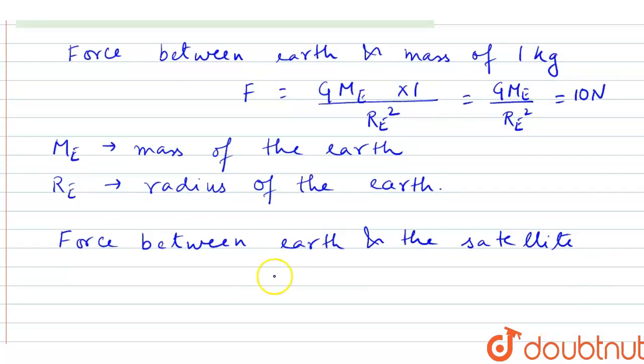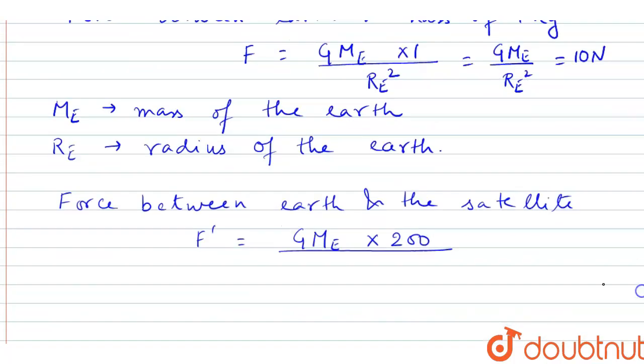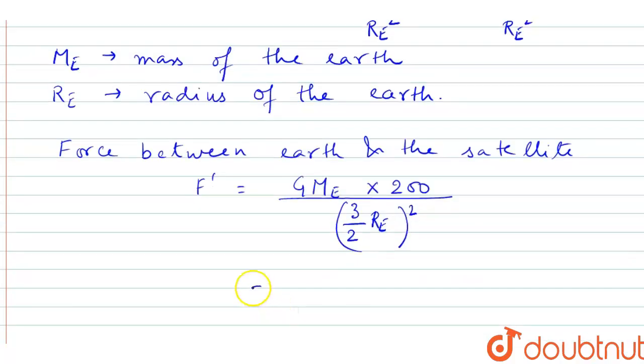F' = GMₑ × 200kg / (3Rₑ/2)². So from here we can write GMₑ / Rₑ² × 800/9.